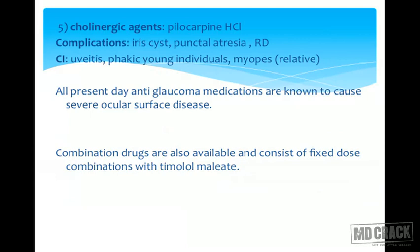Cholinergic medicines, though fallen into disrepute due to more effective alternatives, remain good drugs for certain glaucomas like phacic glaucoma. However, they are relatively contraindicated in young phacic individuals as they can cause ciliary spasm and chronic frontal headaches. Complications of pilocarpine include retinal detachment due to contraction of the peripheral uvea at the ora serrata, and iris cyst formation on chronic use. It is contraindicated in uveitis and relatively contraindicated in myopes. All anti-glaucoma medications are known to cause severe ocular surface problems due to the preservative benzalkonium chloride. Combination drugs in fixed-dose combinations, most involving timolol as the second drug, are also available.